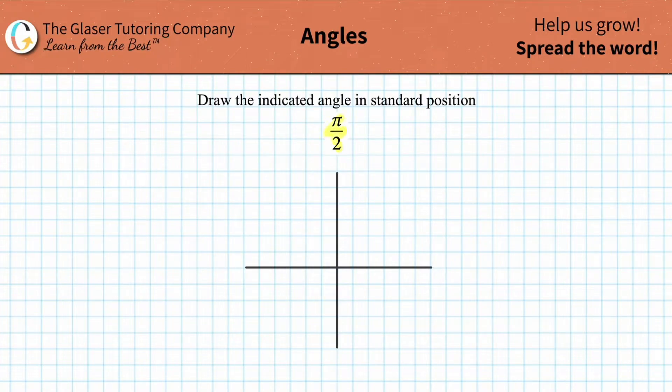Let's take a look at how to draw π/2 radians in standard position. The first step is to draw the initial side of the angle in the positive x direction.